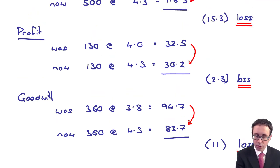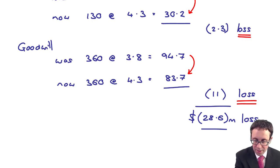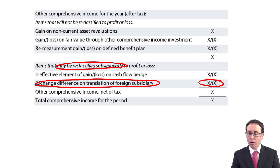And if you total up all of those three figures, the 15.3, the 2.3 and the 11, that will give you $28.6 million, which is a loss. And that loss that you have there will go through OCI. So it will appear here. There we go.